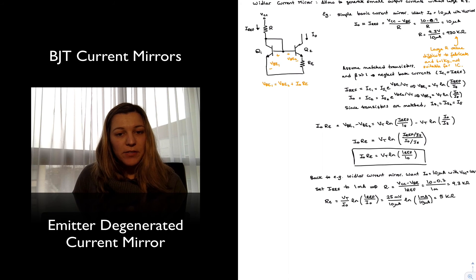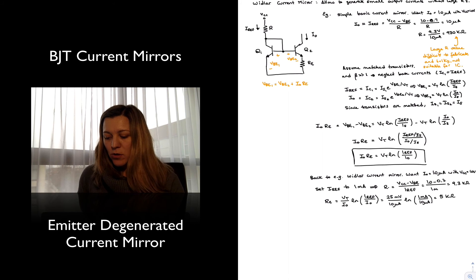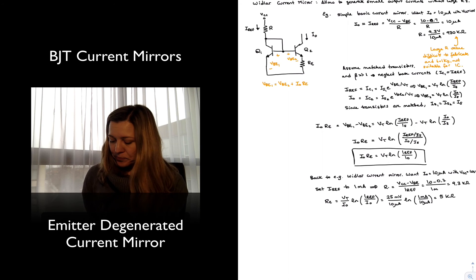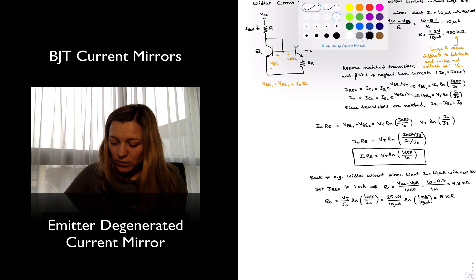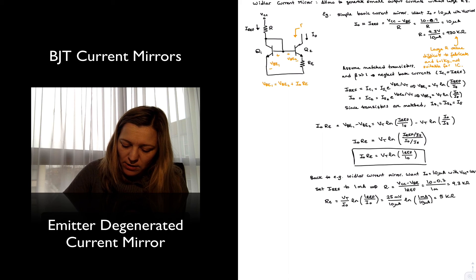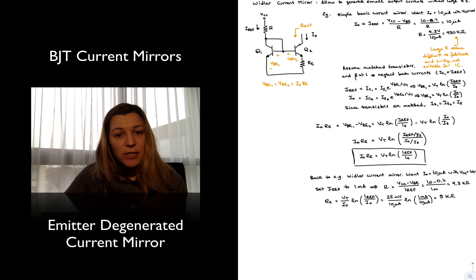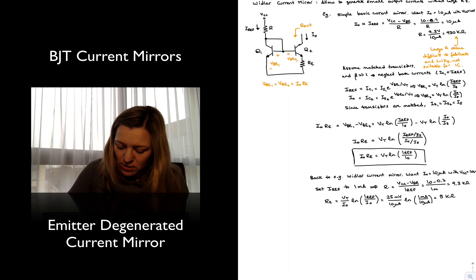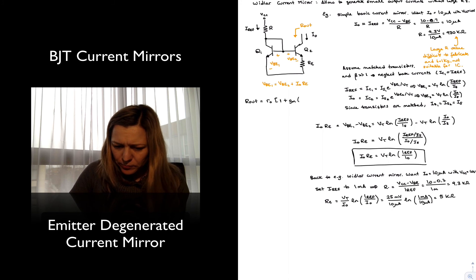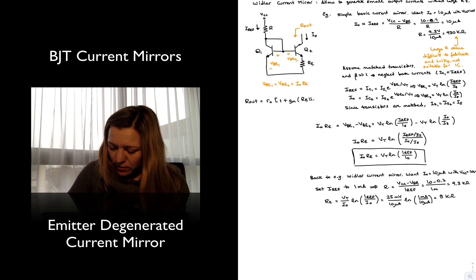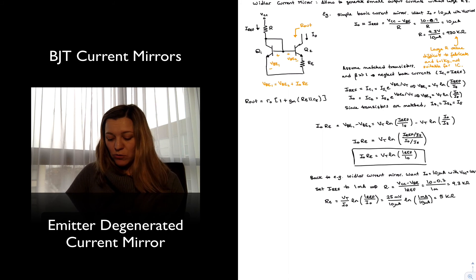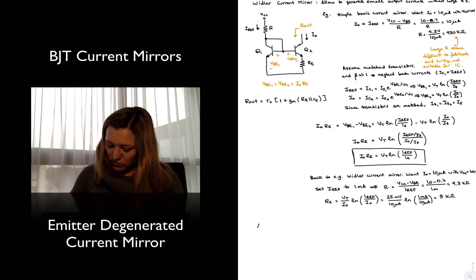So voilà, I've been able to generate the same current — 10 microamps — with resistors in the kilo ohm range, less than 10 kilo ohms, as opposed to almost 1 mega ohm with the basic mirror. That highlights the advantages of the Widlar current source. For the output resistance, we can see that it's going to be just the same as an emitter-degenerated current mirror, because this is essentially an emitter-degenerated mirror. So the output resistance is going to follow the same expression: R_out times (1 plus GM·RE) in parallel with R_pi. The maximum value is going to be R_out times (1 plus beta).